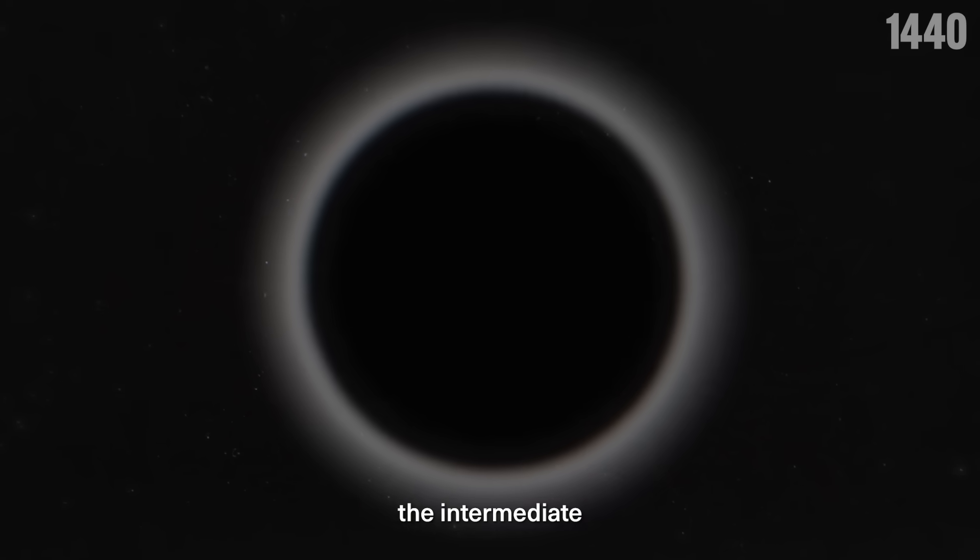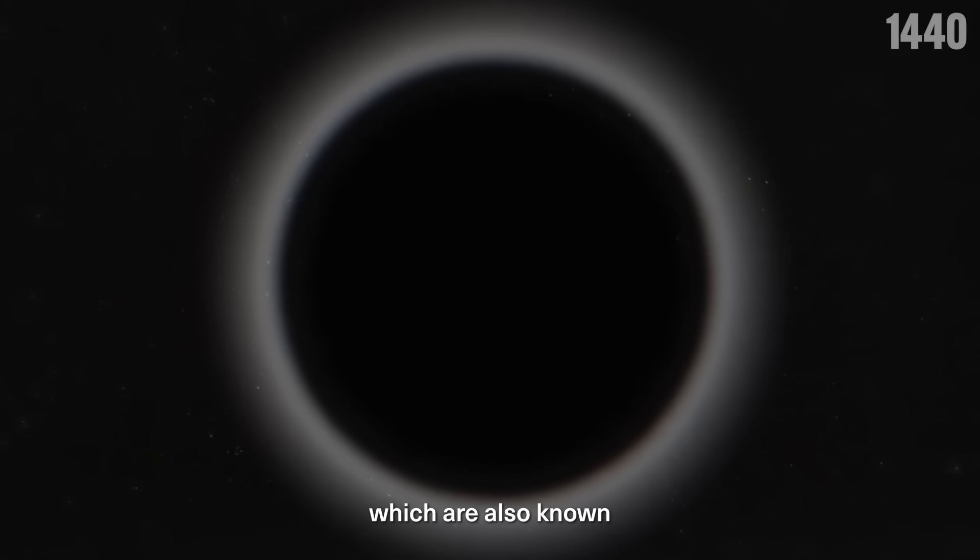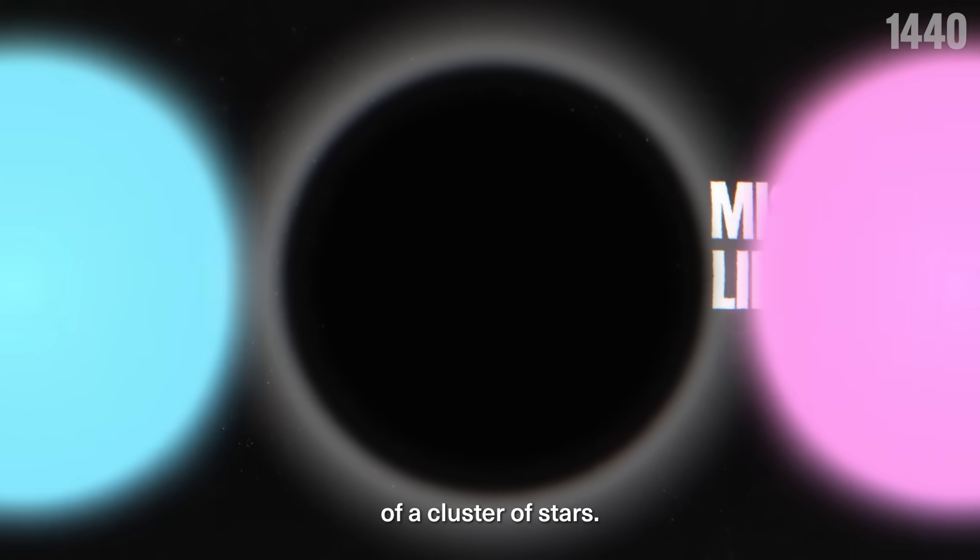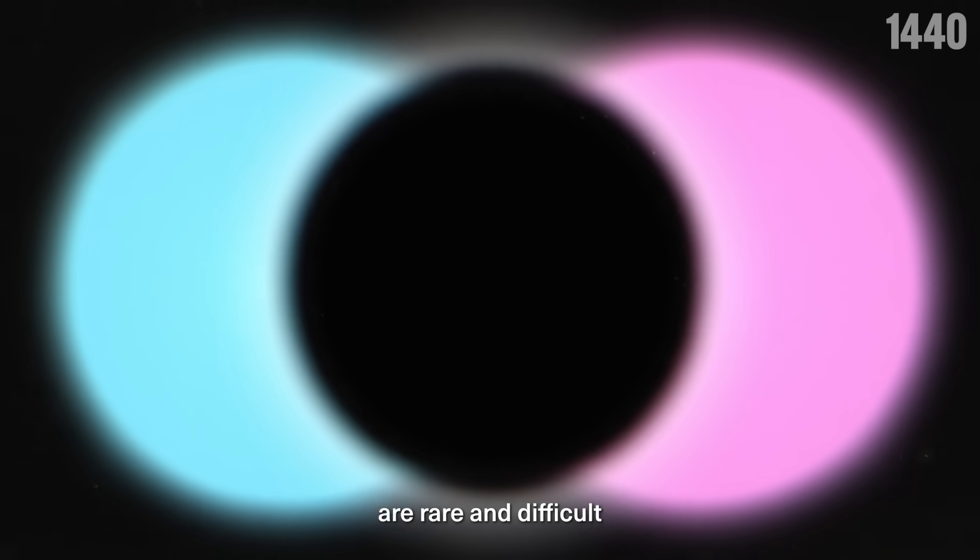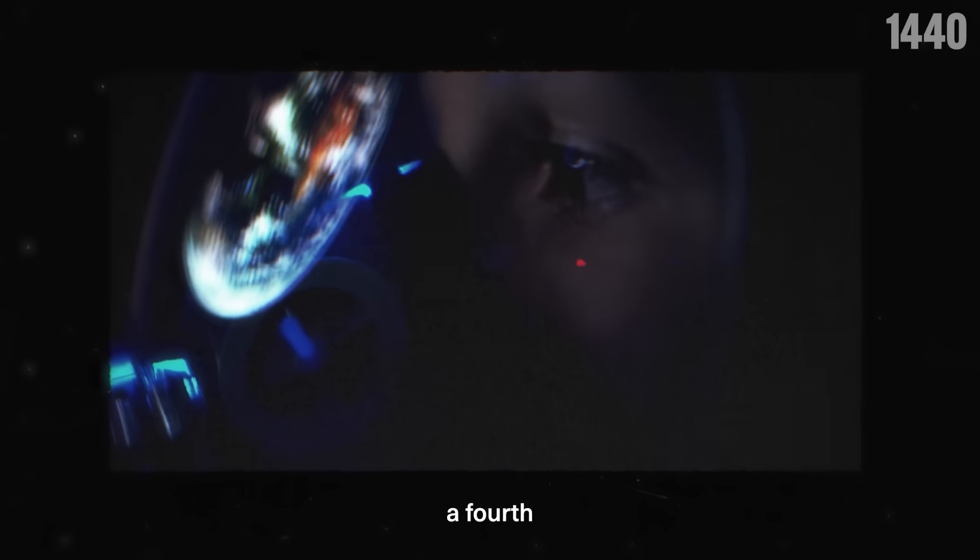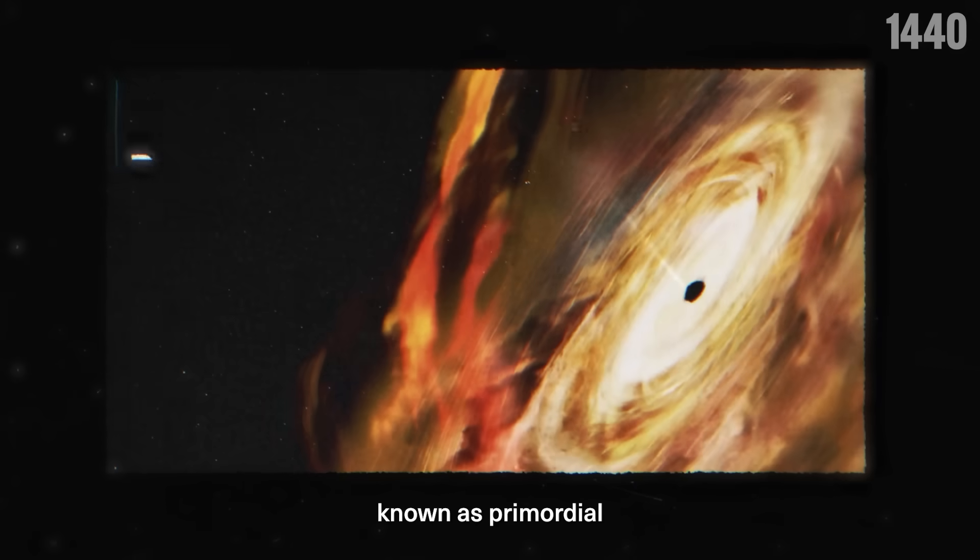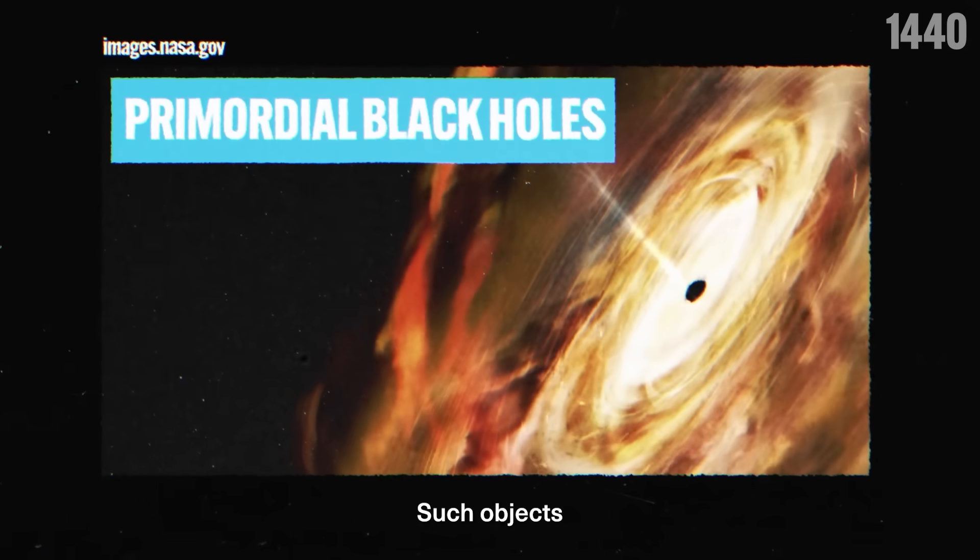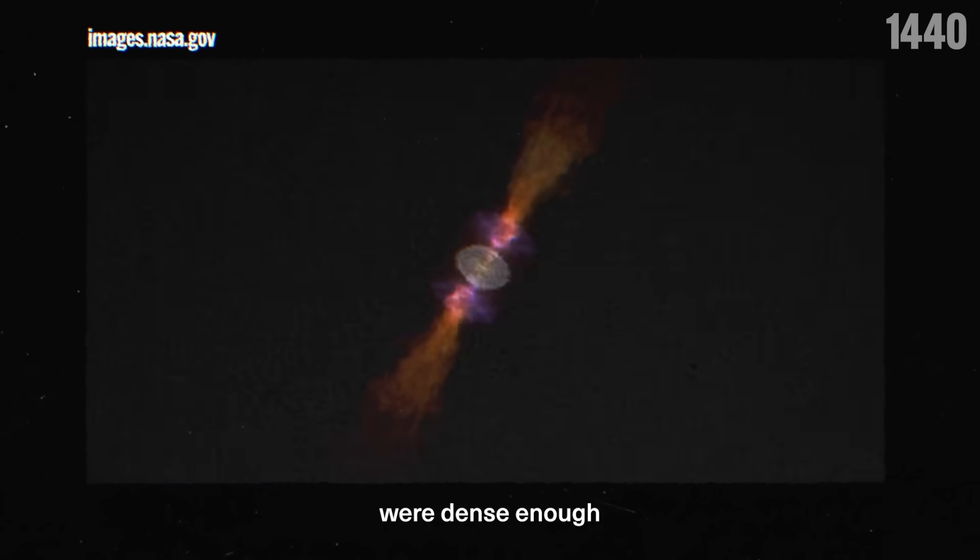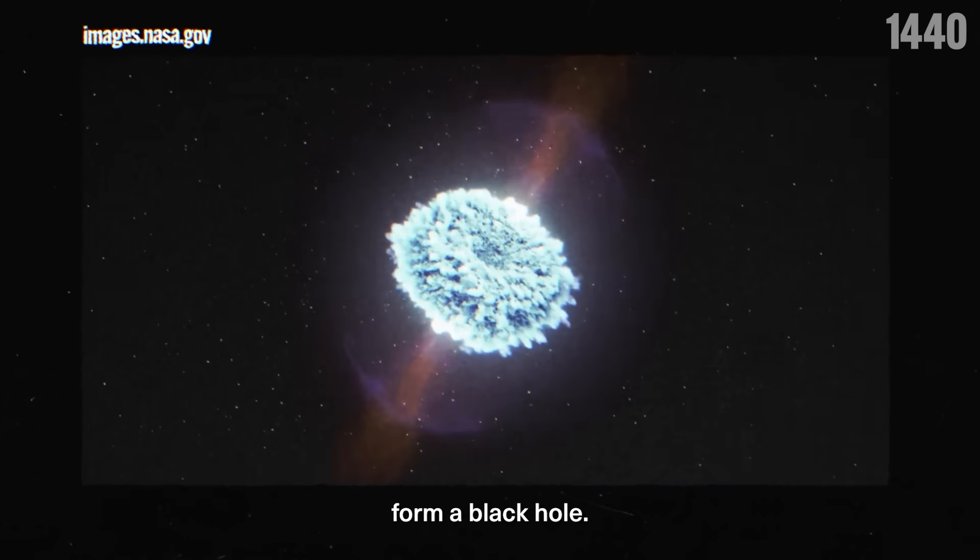The third type, the intermediate mass black holes, which are also known as the missing link black holes, are likely formed from the collapse of a cluster of stars. However, these black holes are rare and difficult to prove. Scientists have also proposed a fourth hypothetical type, known as primordial black holes. Such objects may have formed in the immediate aftermath of the big bang when pockets of gas were dense enough to spontaneously form a black hole.